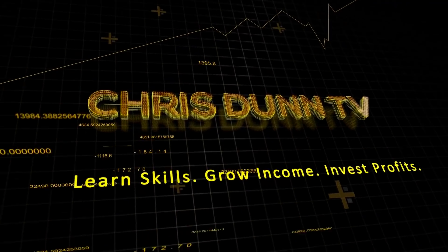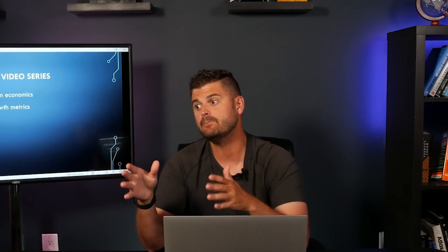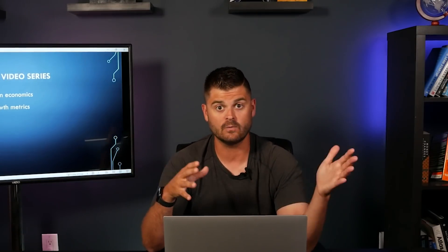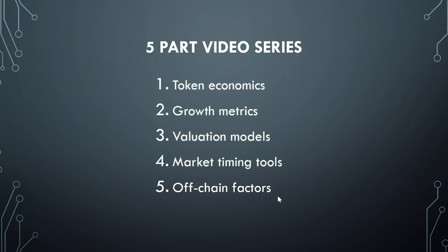Hey guys, welcome back to part two in this video series that's all about teaching you about Bitcoin fundamental analysis. In the previous video, part one, we talked about the basics of Bitcoin's token economics. In this video we're diving into growth metrics — basically how do you look at the Bitcoin network and the flow of people and capital to see if Bitcoin is growing or contracting. In future videos we're going to talk about valuation models, market timing tools, and off-chain factors that influence Bitcoin's price and health.